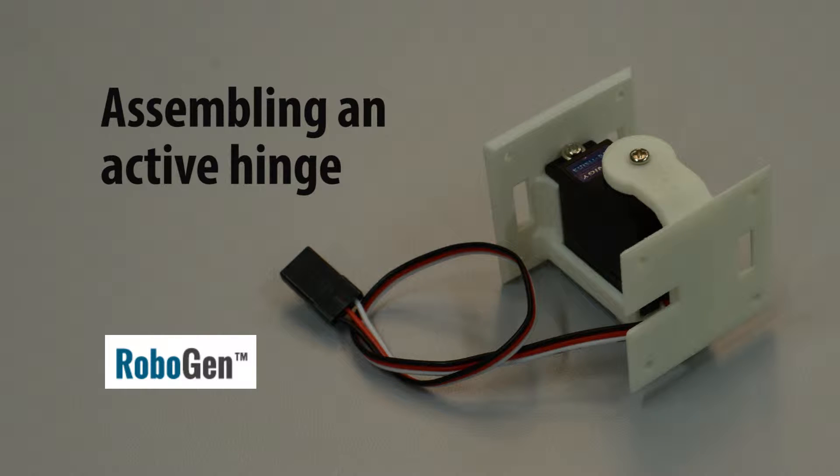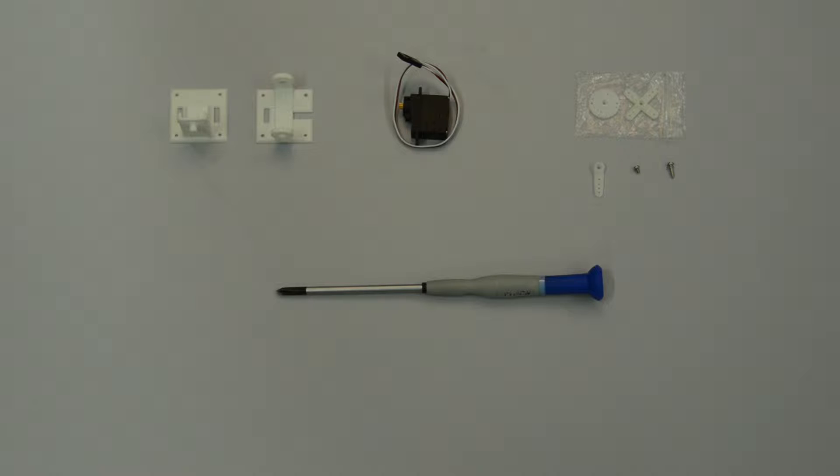How to Assemble a RoboGen Active Hinge. You will need the two hinge parts, a servo and its accessories, and a screwdriver.